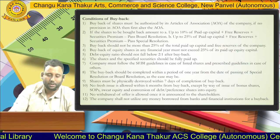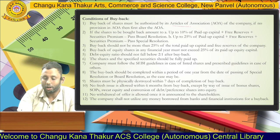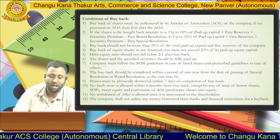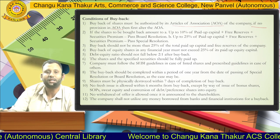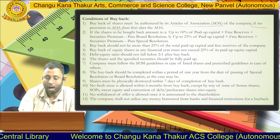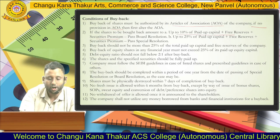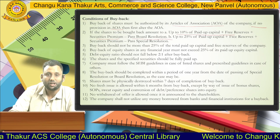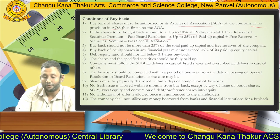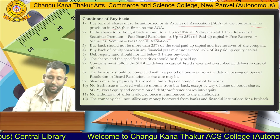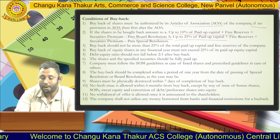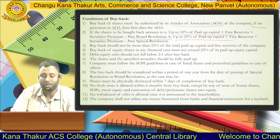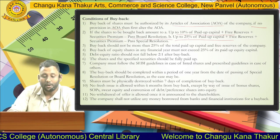Now, what are the conditions of buyback? First, buyback of shares must be authorized by the articles of association. If there is no provision in the articles of association, it must be altered. Second, if the shares to be bought back are up to 10% of paid-up capital plus free reserves plus securities premium, only a board resolution needs to be passed. For up to 25% of paid-up capital plus free reserves plus securities premium, a special resolution must be passed.